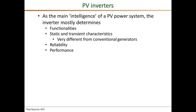In terms of reliability, the entire PV power system reliability is dominated by the reliability of the inverter and its components, because the PV modules themselves are highly reliable — they have 25 to 30 years lifetime. So a poor design of the inverter can bring down the reliability of the entire system.